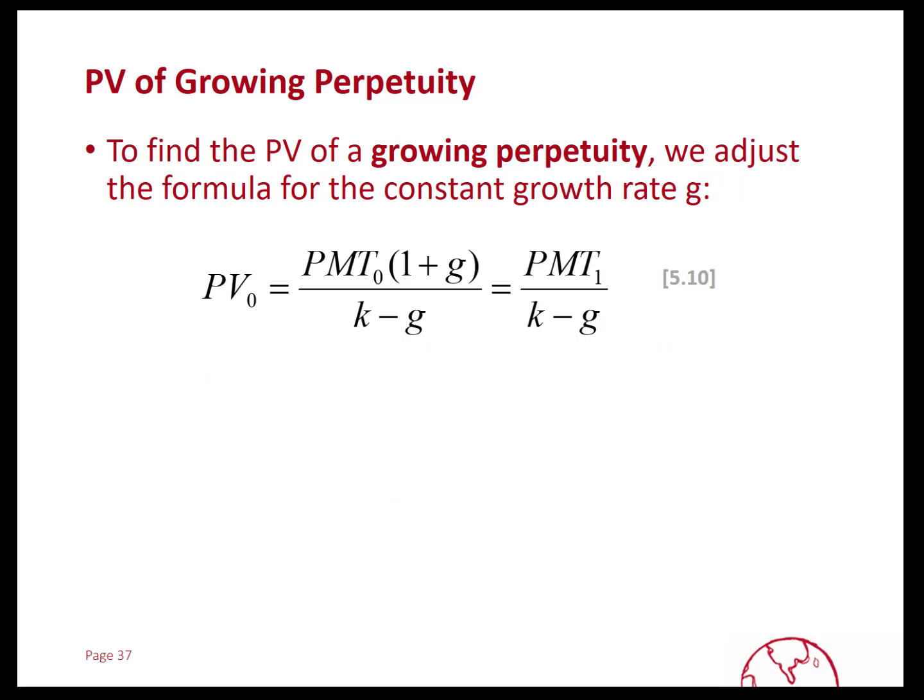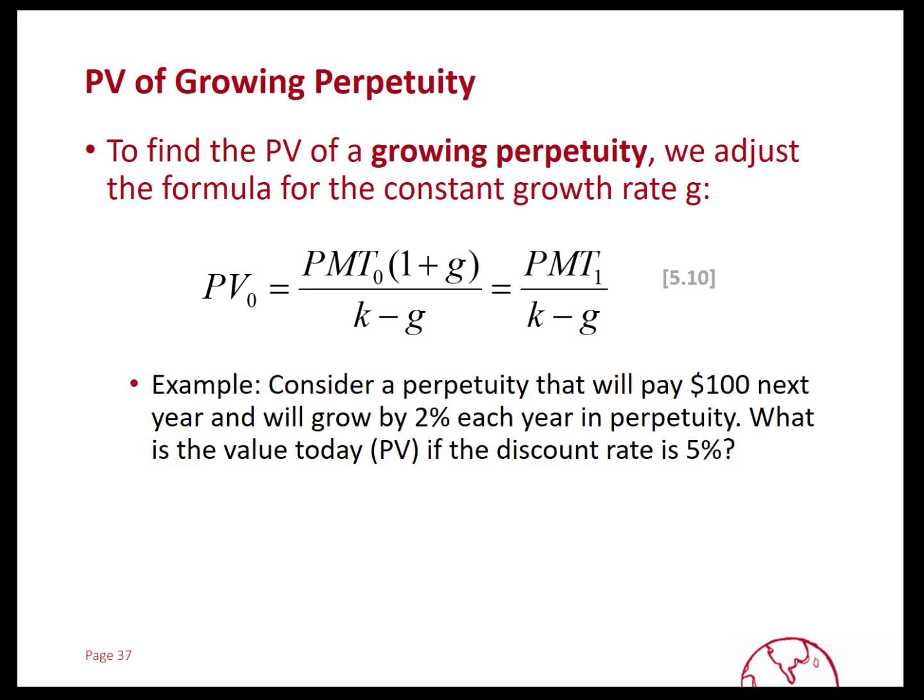The present value of a growing perpetuity is a little more complicated, but it is a quite straightforward formula. We adjust both the numerator and the denominator by the growth rate. We look at the payment received at the end of the first year, denoted as Payment 1. If you know the previous payment just paid, you can calculate Payment 1 by growing it by 1 plus the growth rate. We then divide by the difference between the discount rate and the growth rate, K minus G. Notice that the growth rate cannot be larger than the discount rate, otherwise this formula does not work. So let's consider that $100 growing by 2% each year in perpetuity with a discount rate of 5%.